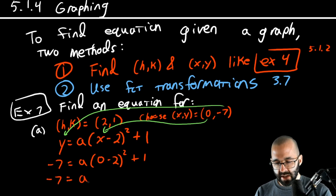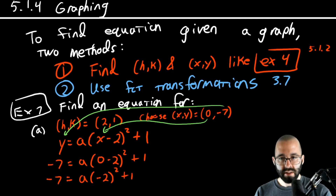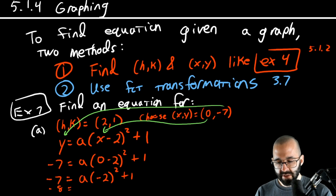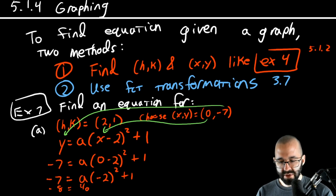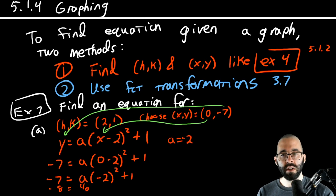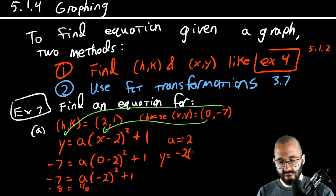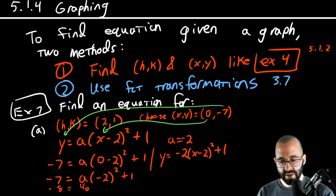Simplifying: negative seven equals a times negative two squared plus one. Subtract one from both sides: negative eight equals four a. Divide both sides by four: a equals negative two. So y is negative two times (x minus 2) squared plus one.